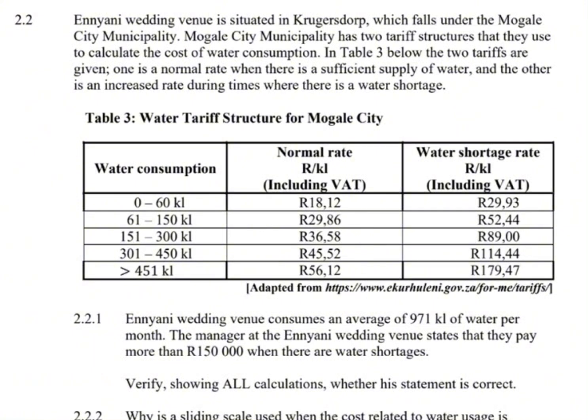Iniyani Wedding Venue is situated in Krugersdorp, which falls under the Mohale City Municipality. Mohale City Municipality has two tariff structures that they use to calculate the cost of water consumption. In Table 3 below, the two tariffs are given. One is a normal rate when there is sufficient water supply, and the other is an increased rate during times where there is a water shortage. Table 3: Water Tariff Structure of Mohale City.